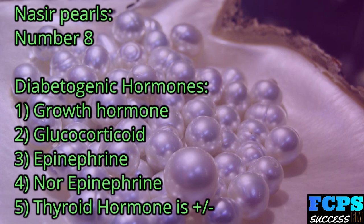Nasir Pearl number 8: Diabetogenic hormones: 1. Growth hormone, 2. Glucocorticoids, 3. Epinephrine, 4. Norepinephrine, 5. Thyroid hormone (plus/minus).